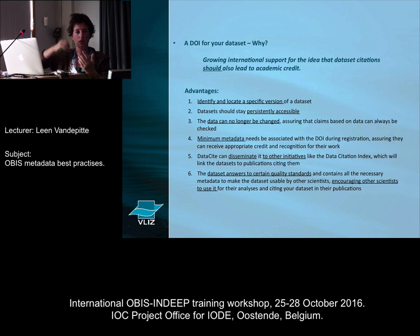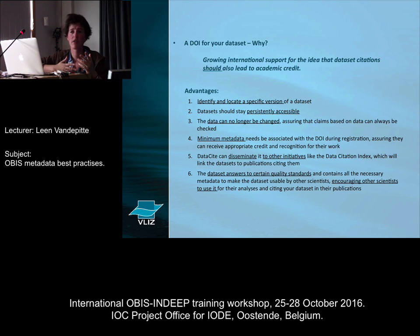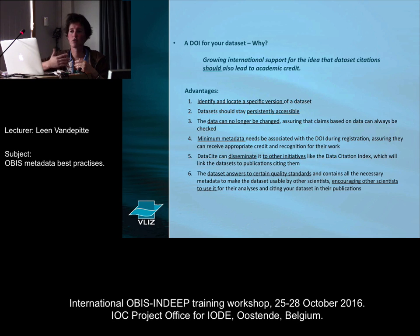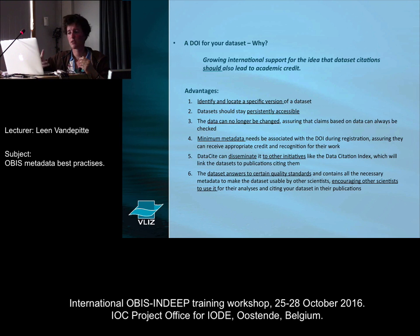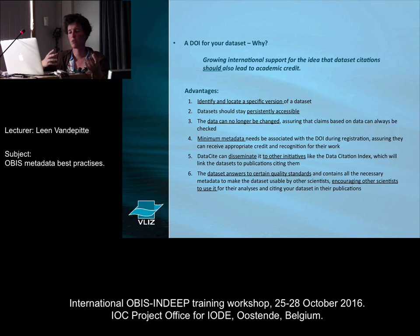Related to making your dataset publicly available is the option to have a DOI — a Digital Object Identifier — for your datasets. It's basically the same as what you have now for publications: publications have a DOI that allows easy traceability. The same goal is put forward for datasets. Within Vliz, we can provide DOIs for datasets and offer that service to all people contributing to OBIS. Once you add a DOI to your dataset, you can no longer change it — you freeze that specific version, link a DOI to it, and people can always go back to that specific version.